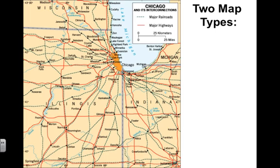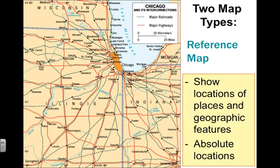There are two types of maps you need to be aware of. You have your reference map, shown here to the left. The purpose behind a reference map is to show locations of places and geographic features — where major cities are, where rivers are, or where mountain ranges are. Basically the idea is to show you absolute locations.